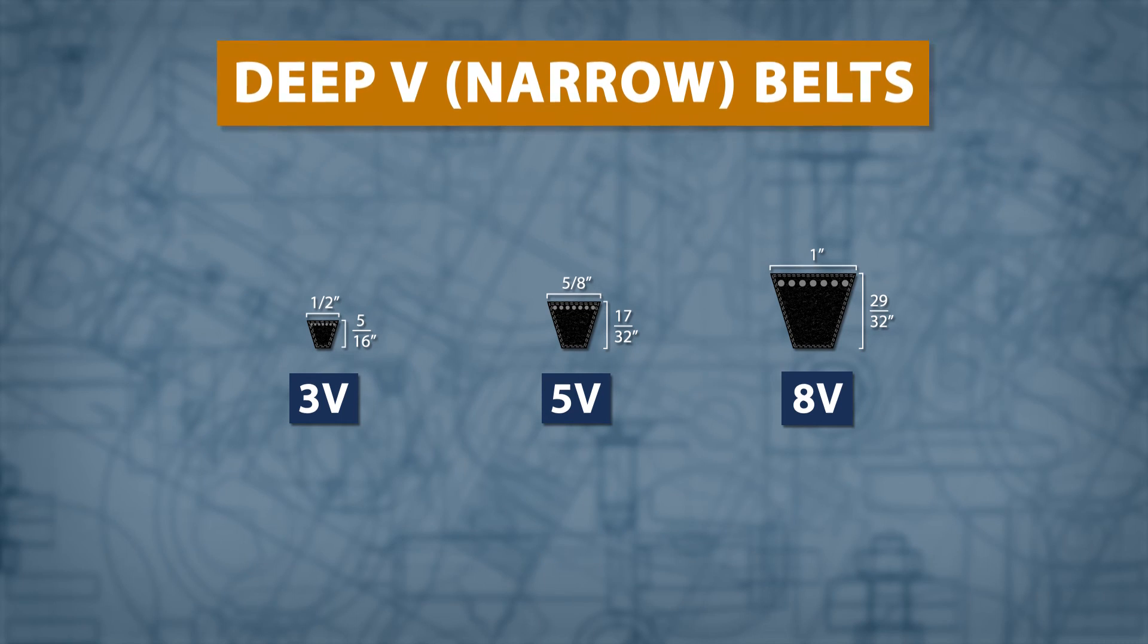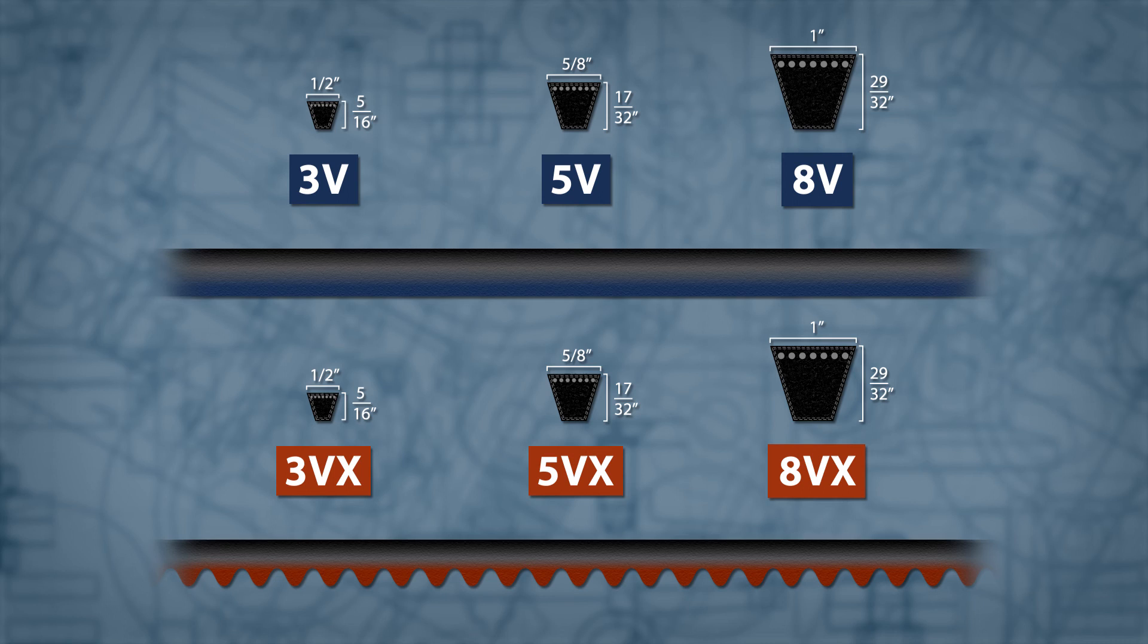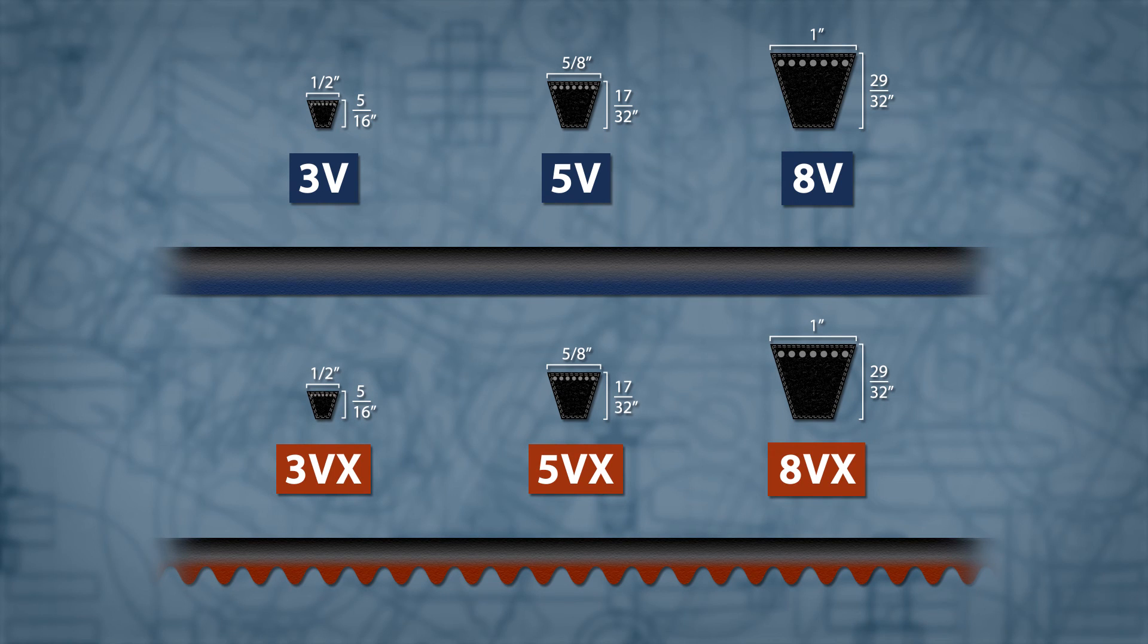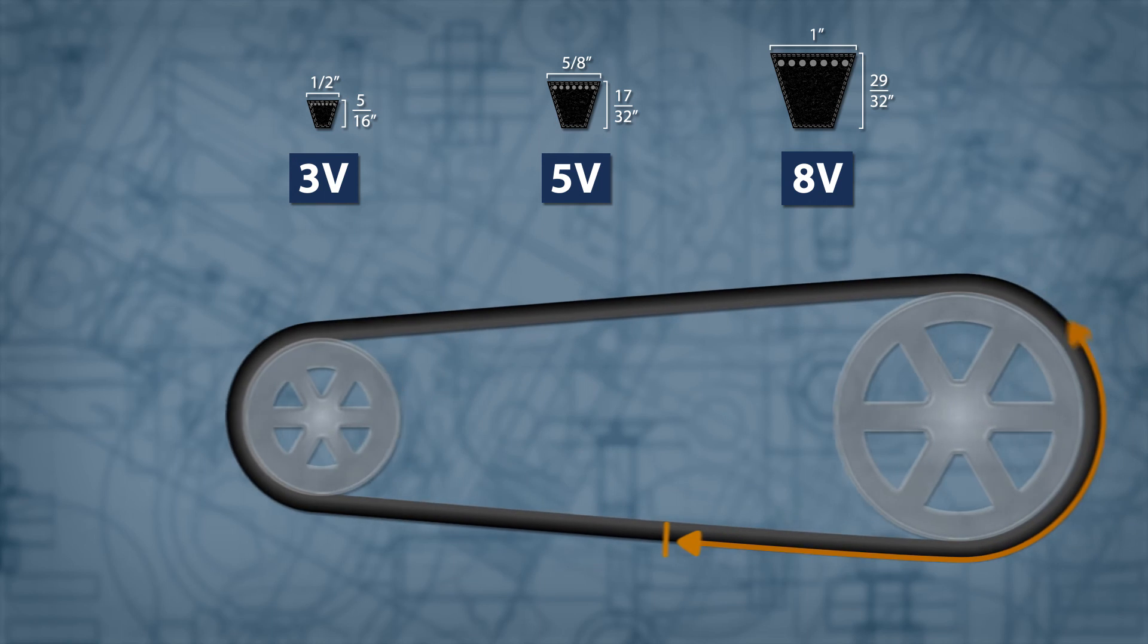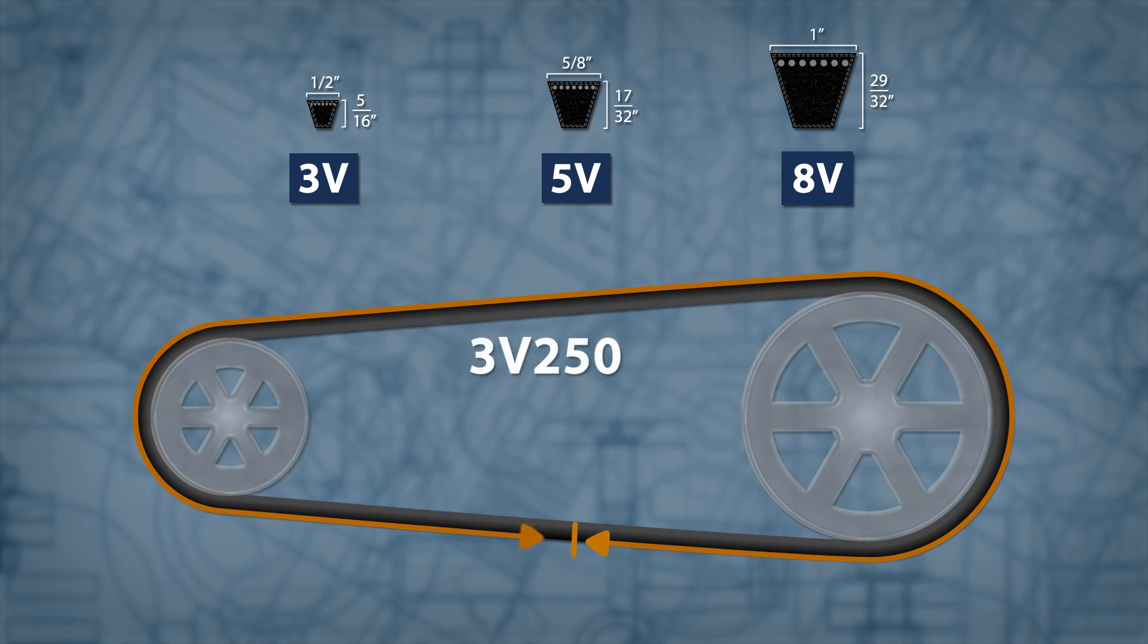Deep V belts are also available as cogged belts, which adds an X to the prefix. These belts are also measured by the outside circumference. This means a 3V250 belt is a half-inch wide deep V belt with a 25-inch outside circumference.